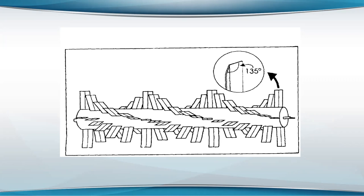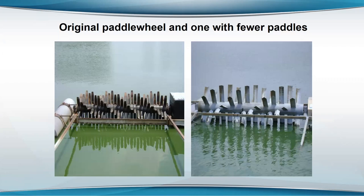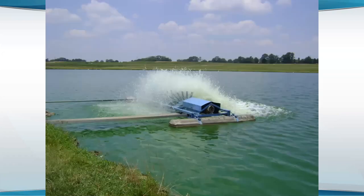We ended up designing a paddle wheel and the farmers — or rather some machinists around — took that design and figured out how to mount it on floats and connect an electric motor to it. There were a lot of problems developing the thing and also figuring out what kind of motor and gearbox to use, whether chain drives or belt drives. But it turned out to be a very efficient aerator.